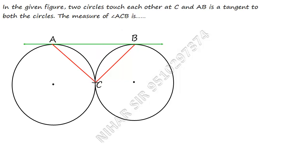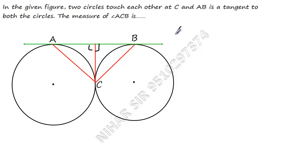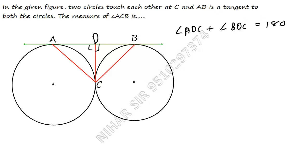For this we have to do a small construction — we draw a small line here. Now let's talk about these two angles: they form a linear pair. A linear pair means the sum of those two angles is 180°. So angle ADC plus angle BDC equals 180°. The reason is linear pair.